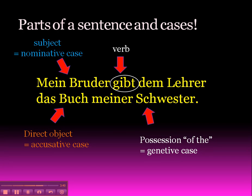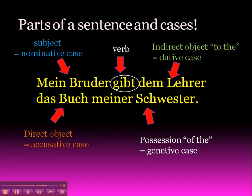So we've got the verb — to give. My brother's doing the giving, so he's the subject. He's giving the book of my sister — my sister's book. And who's he giving it to? He's giving it to the teacher. When you can translate it as 'to the,' or 'to my,' this is the indirect object, and in German that's the dative case. And that's really all there is to it — they're just labels, so don't be overwhelmed by it. Stay tuned for the next screencast to explain the details. Bye for now.